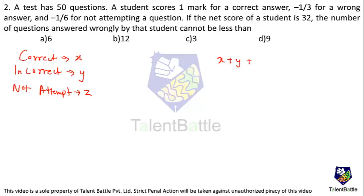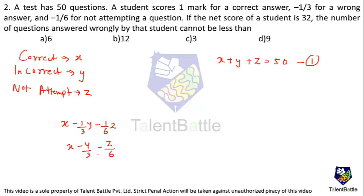First equation: x plus y plus z equals 50, since there are 50 questions total. Second equation: the net score is x minus y/3 minus z/6 equals 32. Multiplying through by 6: 6x minus 2y minus z equals 192. This is the second equation.